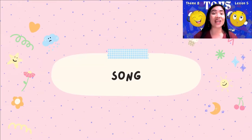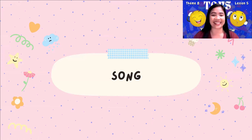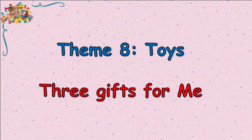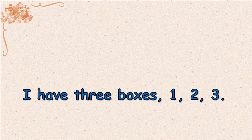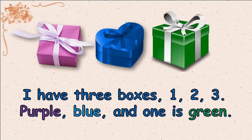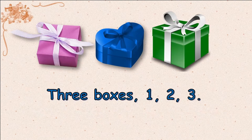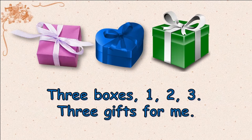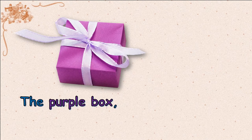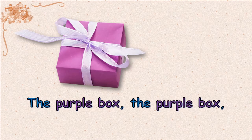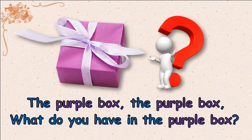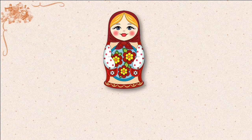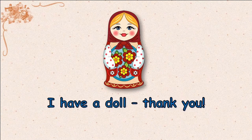It's time to sing a song! Yay! Let's sing along! This is the theme song of Theme 8. I have 3 boxes — 1, 2, 3. Purple, blue, and 1 is green. 3 boxes, 1, 2, 3. 3 gifts for me. The purple box — what do you have in the purple box? I have a doll. Thank you. You're welcome.